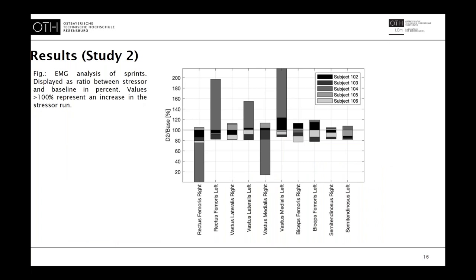The EMG analysis of the sprints shows the ratio between stressor and baseline in percent, where values over 100% represent an increase in the stressor run. It also shows a heterogeneous behavior over all muscles and subjects. There is no pattern to be detected — muscles and subjects all react very individually. For example, the fourth subject shows very high fluctuations compared to others, but only in the extensor muscles; the flexor muscles are not affected to the same extent. But no general conclusion for flexors, extensors, or any one subject can be drawn, as there are both upward and downward fluctuations.